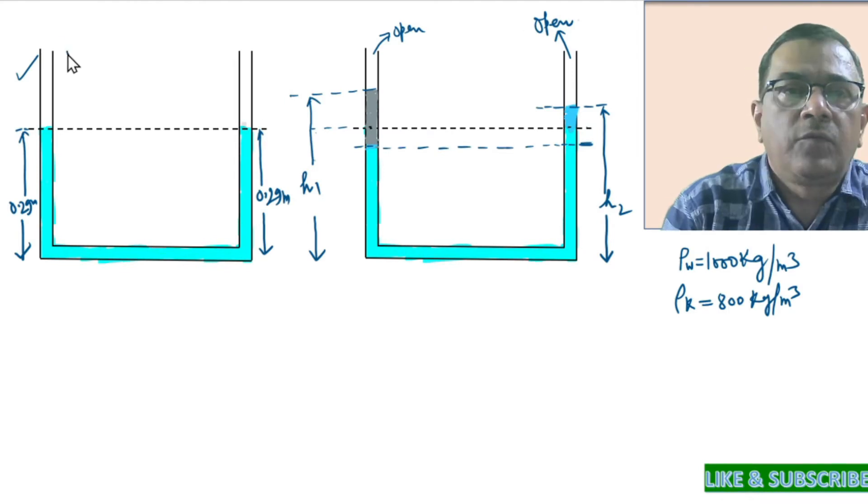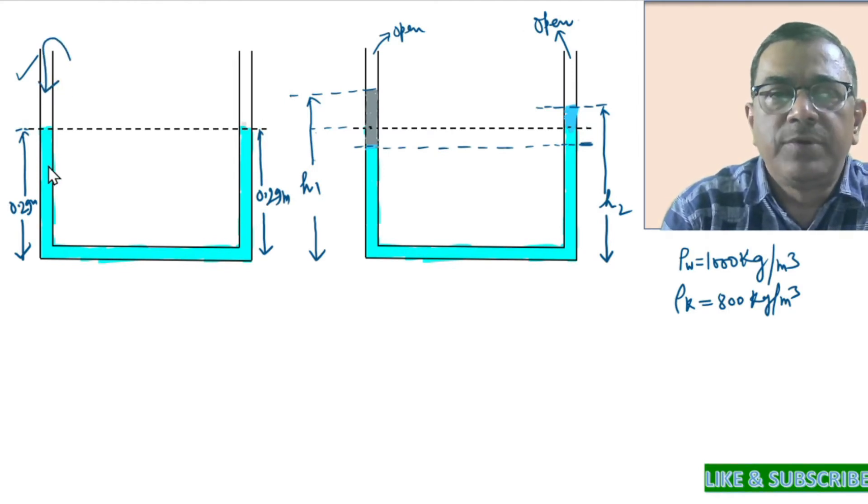Now you see, kerosene is added in the left arm of the tube. The length of the kerosene in the left arm is 0.10 meters. Now, as the kerosene is added in the left arm, the level of water column drops, say by an amount X.